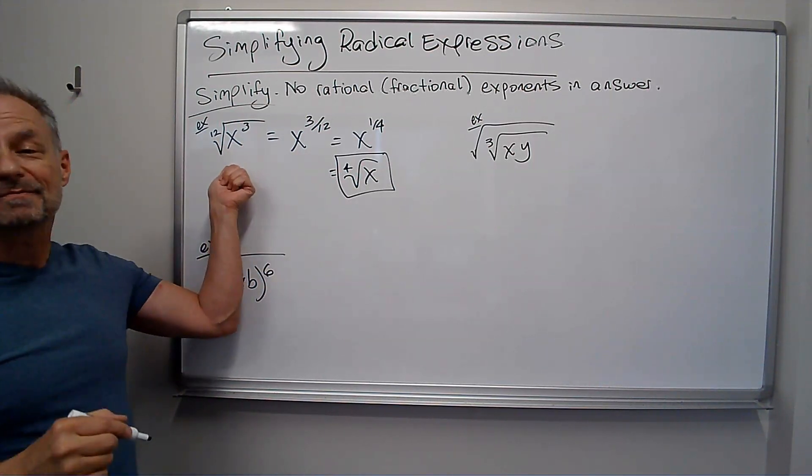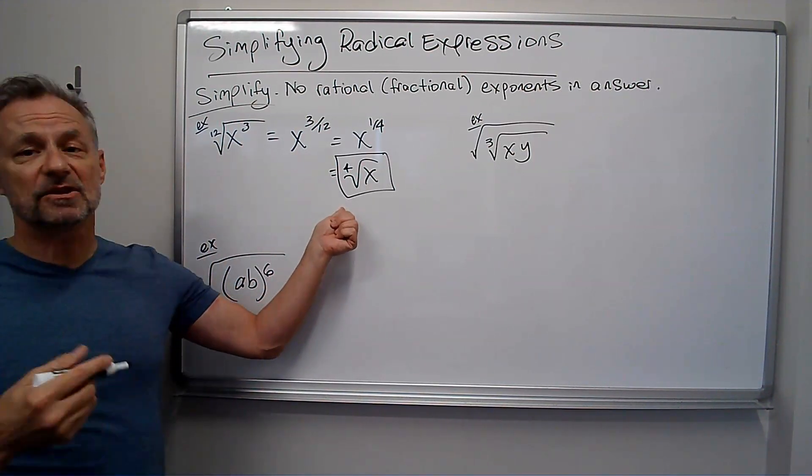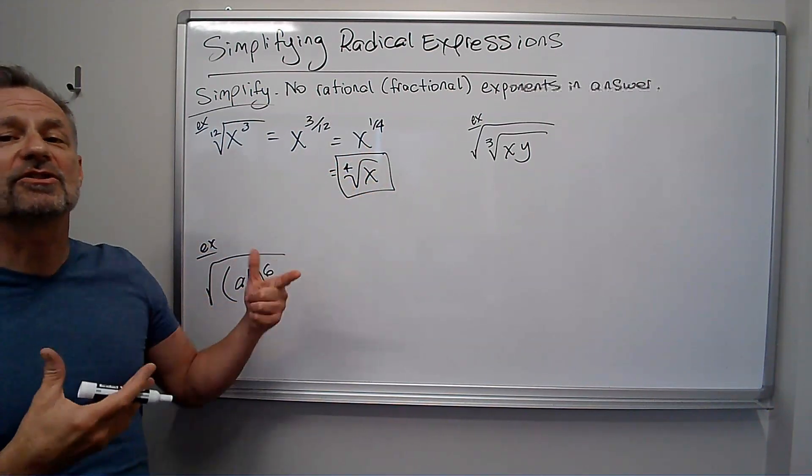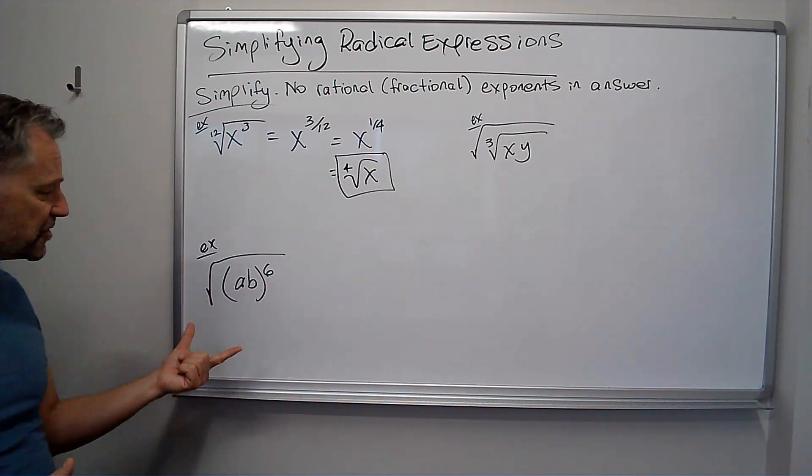So we simplified it. It's still a rational exponent up here. We just change to the fourth root. Here's another one.